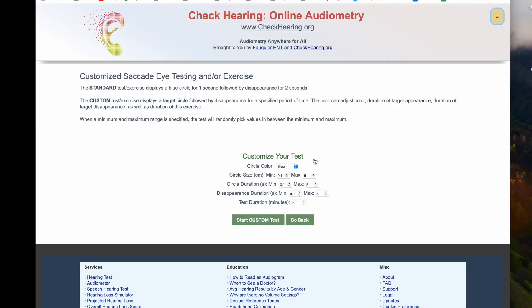There is also a custom setting in order to change the speed and or duration of the test, as well as vary the size and color of the target circle.